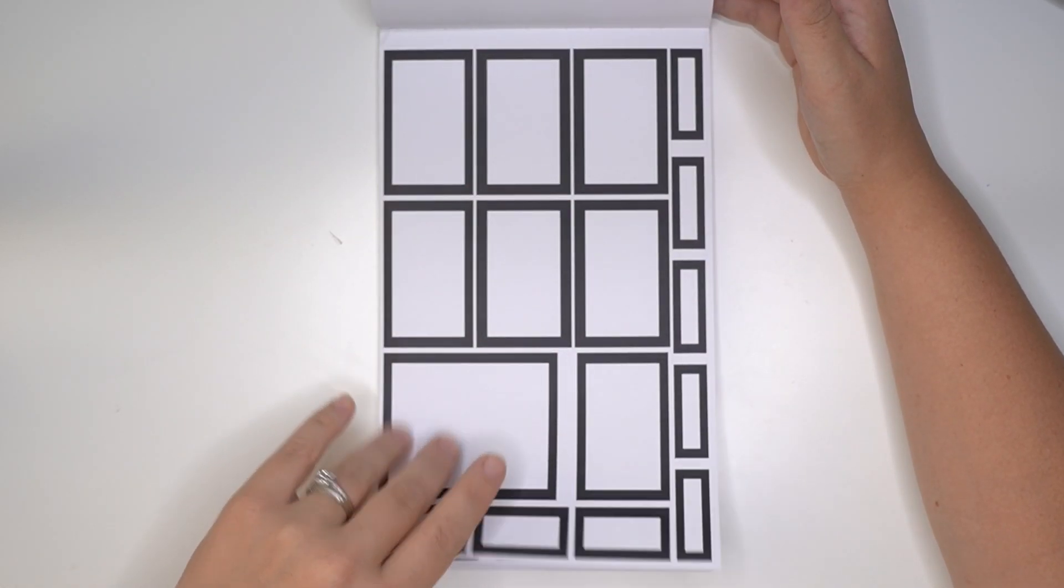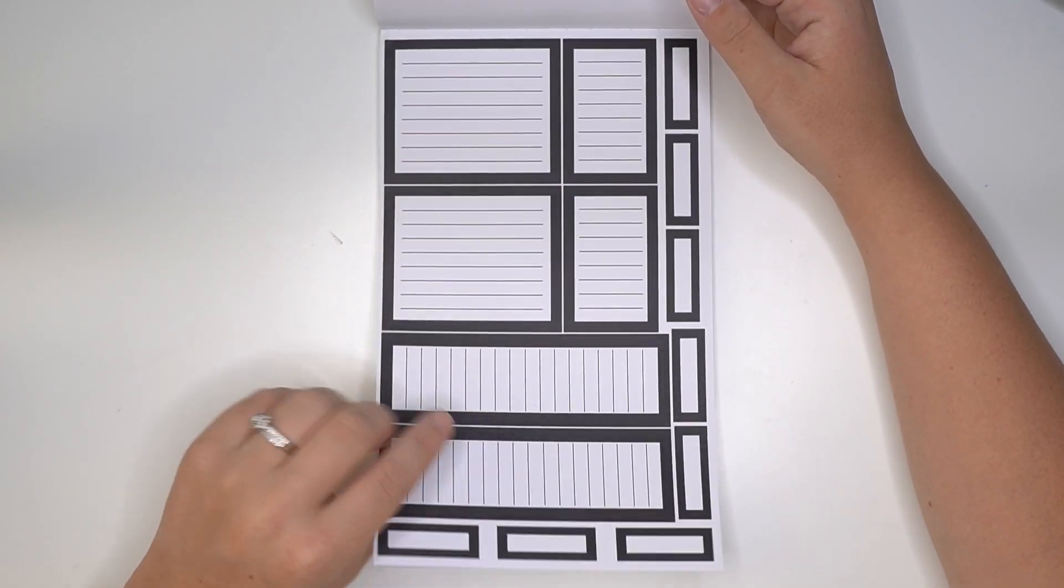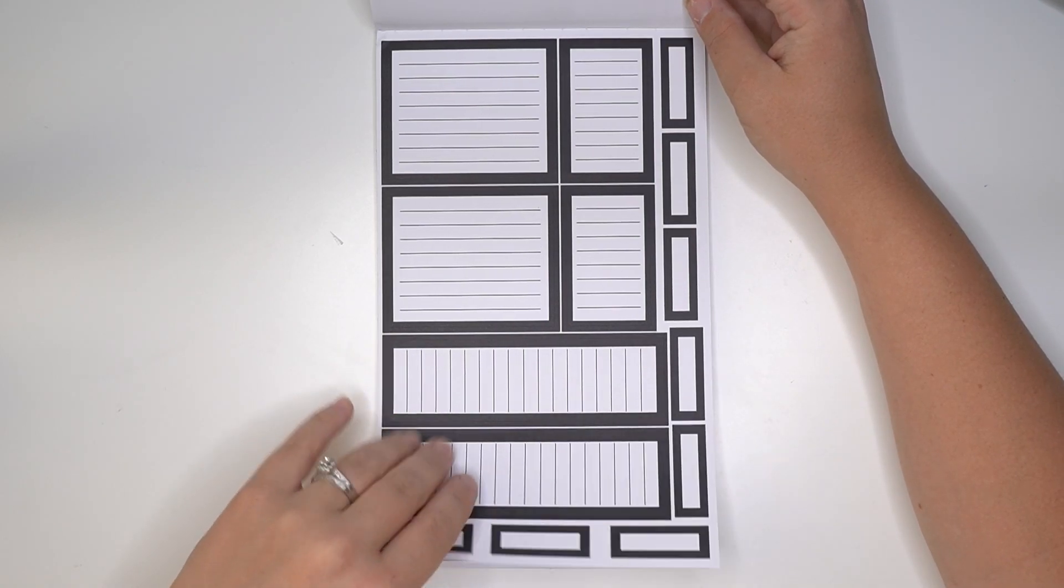As you can see, you get plenty of pages with all the different sizes and shapes. And then we have a few pages that have lines on them, even those long boxes.